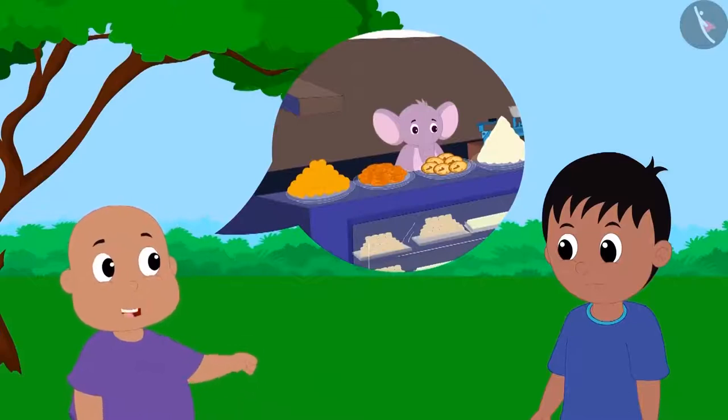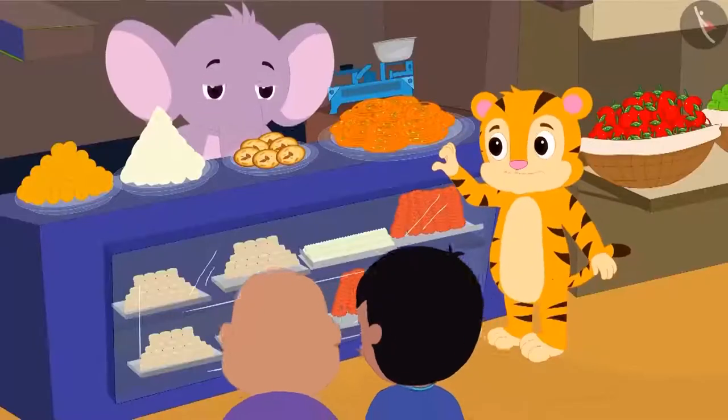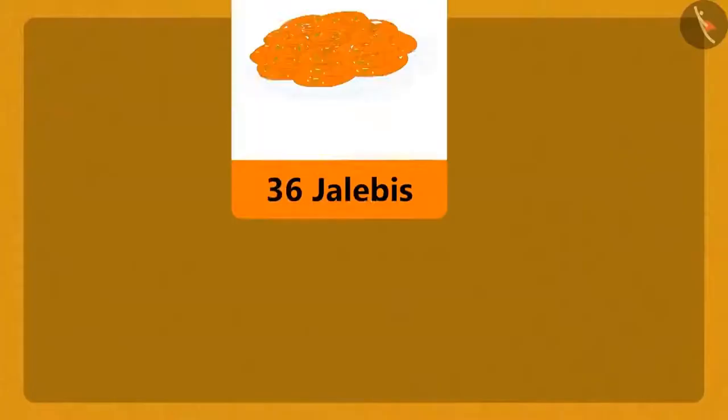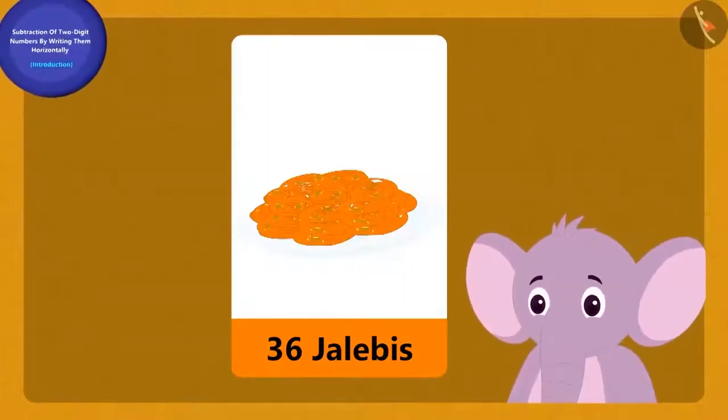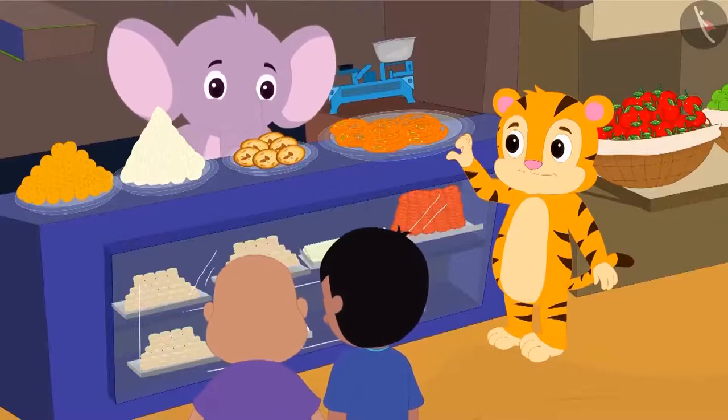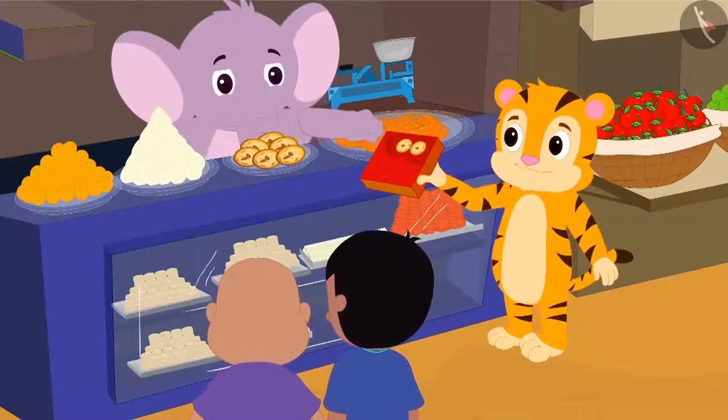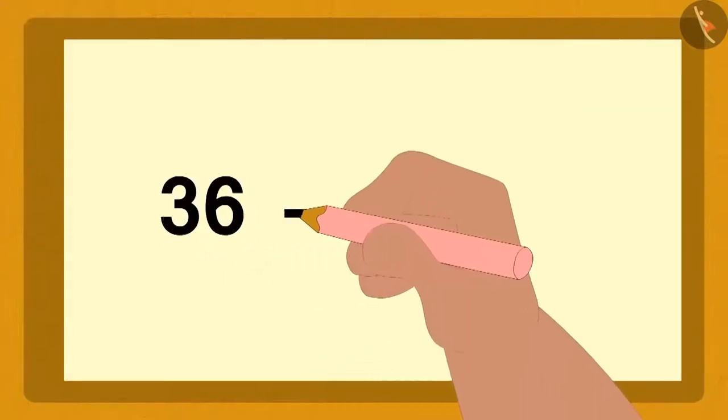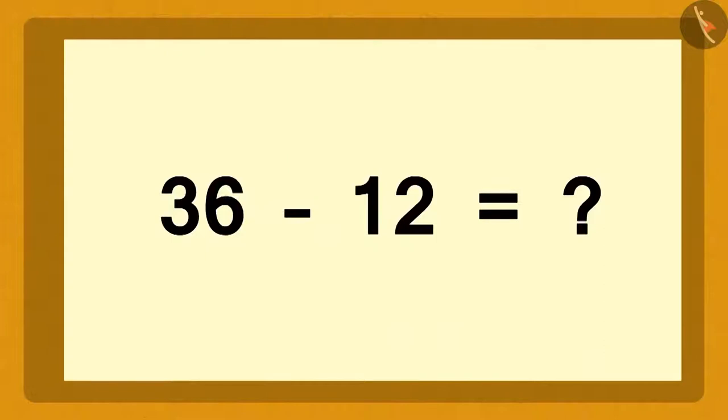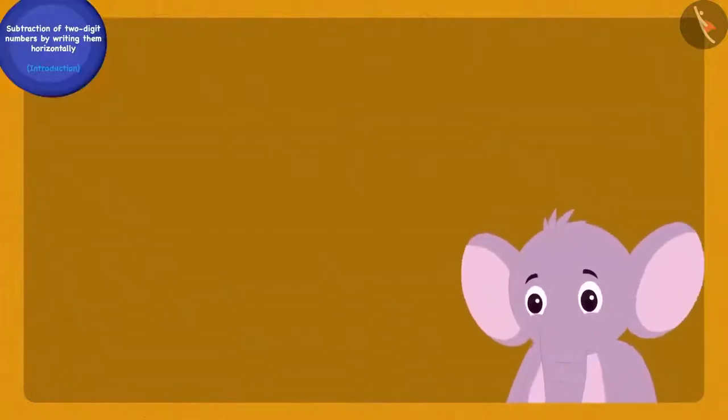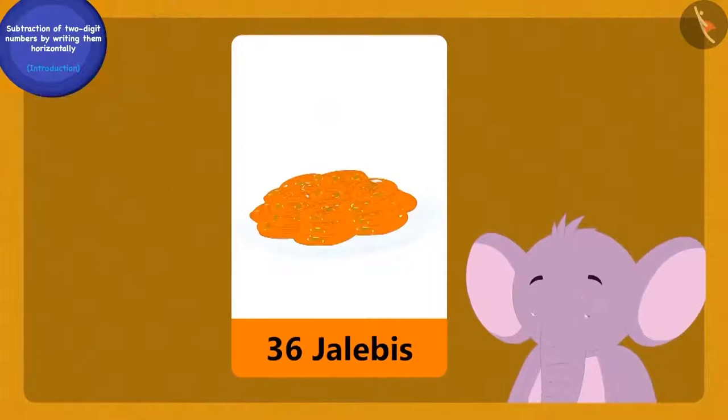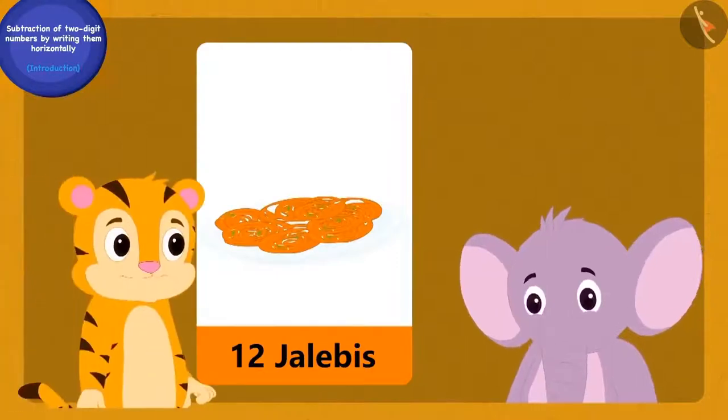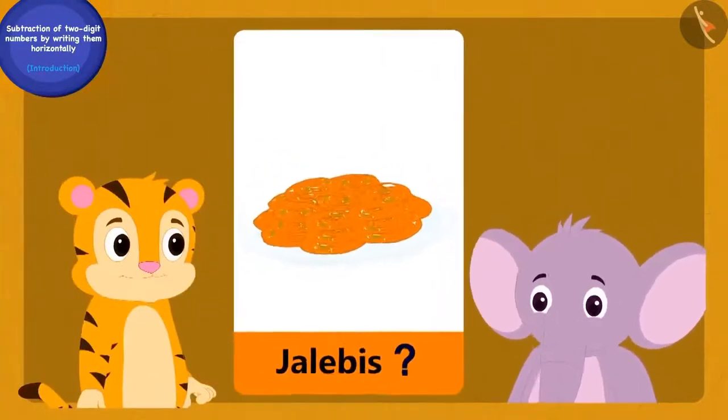I will give you another example there. When Raju and Bablu went to Appu's sweet shop, they saw that Appu had 36 jalebis. Then Sher Khan bought some jalebis from him and now he has 12 jalebis left. Bablu wrote a question like this on paper and asked Raju, look, Appu had 36 jalebis earlier. Now he has 12 jalebis. We have to find out how many jalebis Sher Khan bought from Appu.